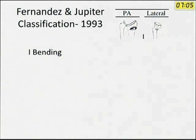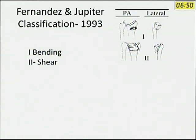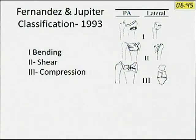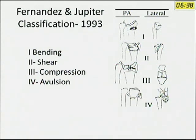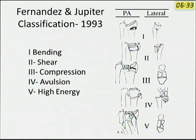One of the most popular classifications is the Fernandez and Jupiter classification, published in 1993. It depends upon the type of forces that produce the fracture. It can be a bending type of force, a shear fracture similar to Barton fractures, a compression fracture involving the distal articular surface leading to comminution, an avulsion fracture which is a fracture dislocation, or a high energy fracture with associated large amount of soft tissue trauma.